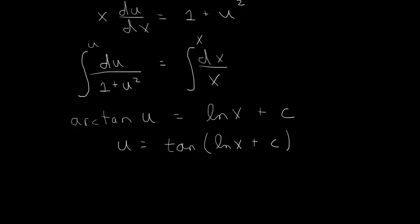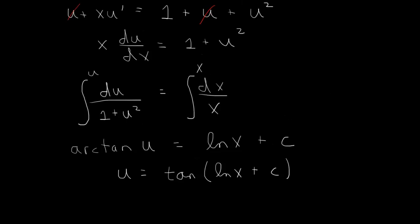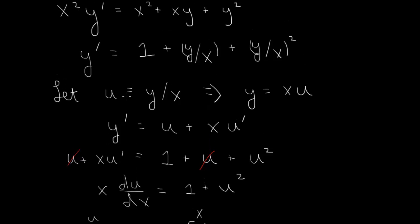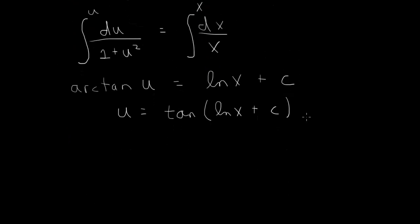And finally, we need to solve for y. So remember that u is y over x, or y is x times u. So to come back to y here, x times u. So we end up with y of x. Our solution is x times u. So x times tangent log x plus the constant, which you determine using from initial conditions.